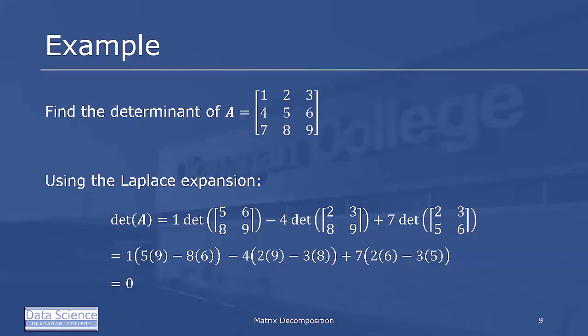Let's revisit the matrix A = [[1,2,3],[4,5,6],[7,8,9]]. We already know det(A) = 0, but let's calculate it using Laplace expansion. Expanding along column 1: det(A) = 1·det([[5,6],[8,9]]) - 4·det([[2,3],[8,9]]) + 7·det([[2,3],[5,6]]). Evaluating each 2×2 determinant and summing, we get 0.